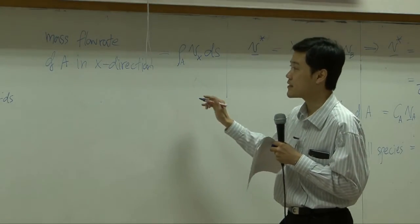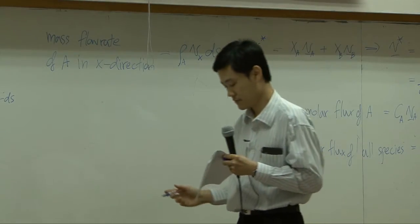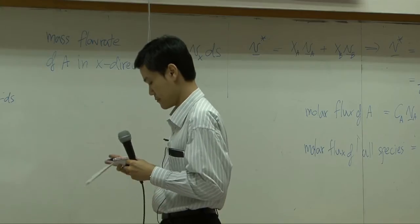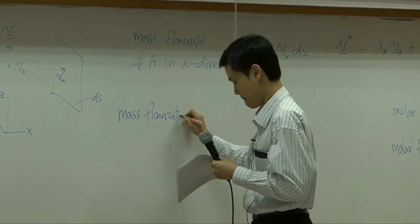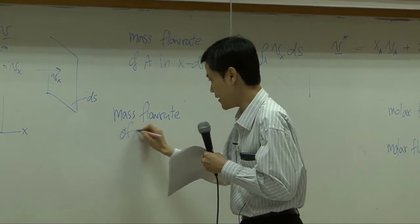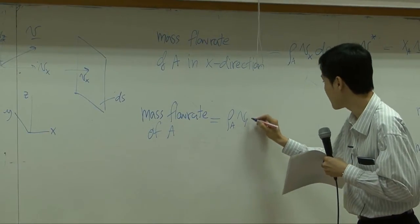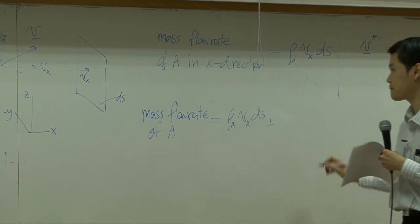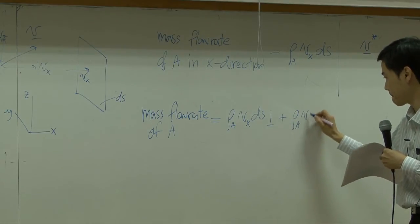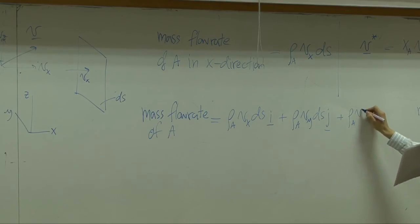Okay? So if you repeat the same process for x, y, z, and you combine them together, you should get mass flow rate of A. In all directions combined, to be rho A, Vx ds times vector i.